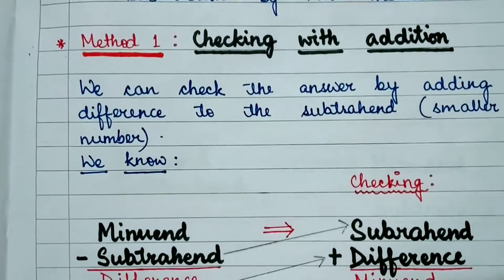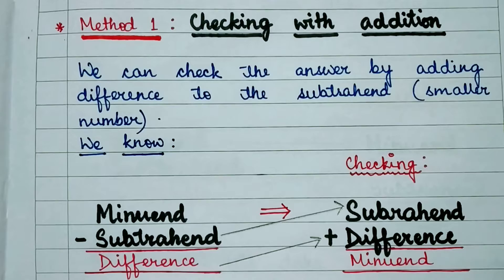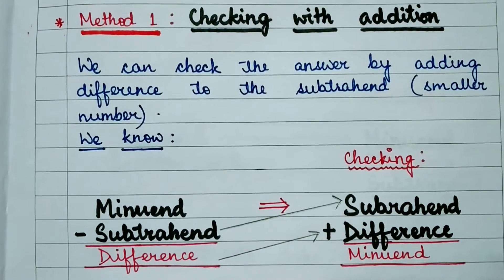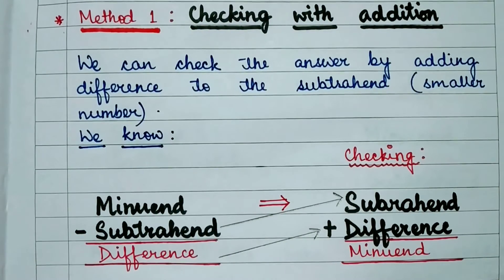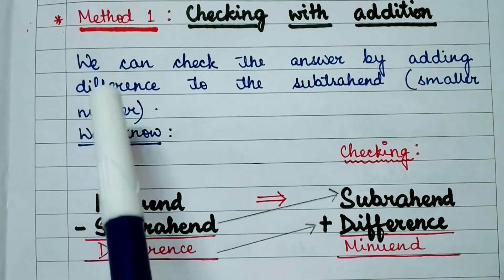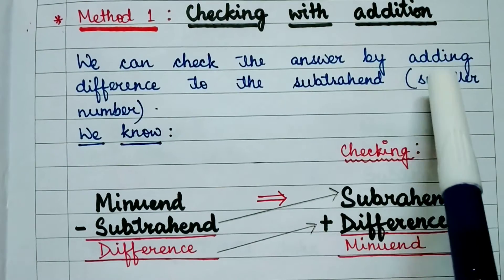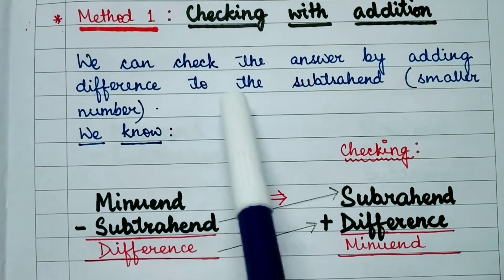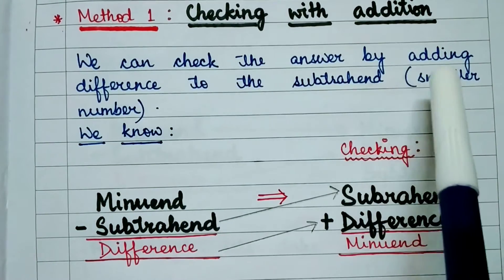Let's learn the first method. The first method is the method of checking subtraction with addition. We can check the answer by adding difference to the subtrahend, the smaller number.